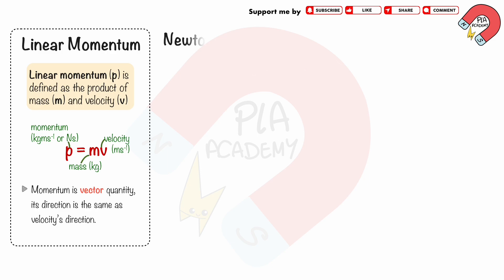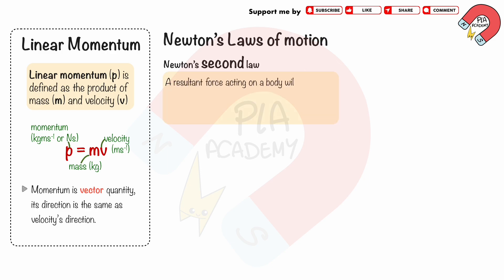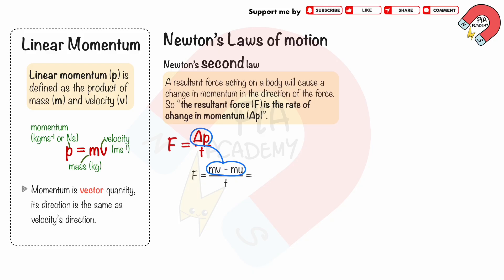Newton's second law of motion states that a resultant force acting on a body will cause a change in momentum in the direction of the force. So the resultant force is the rate of change in momentum. The formula for the resultant force is F equals delta p divided by t, where delta p is change in momentum, which is mv minus mu. And since v minus u over t is the acceleration a, the resultant force can be written as F equals ma.